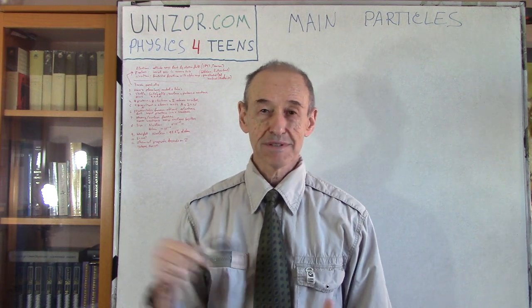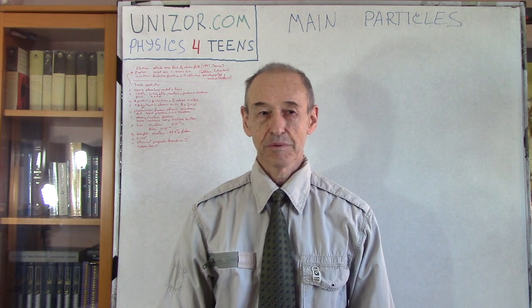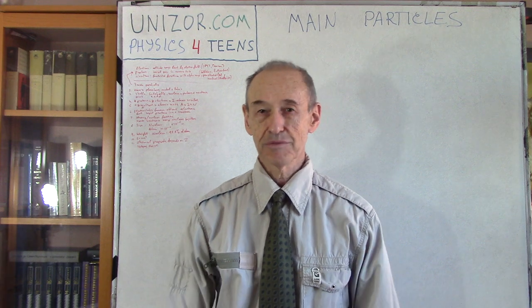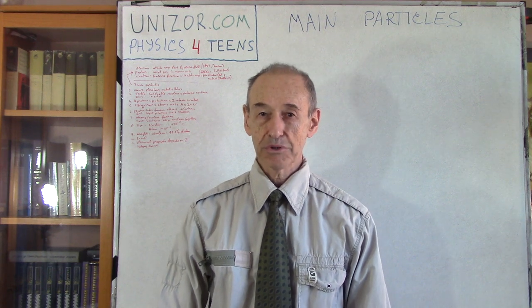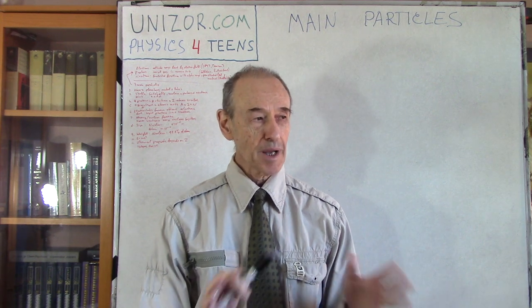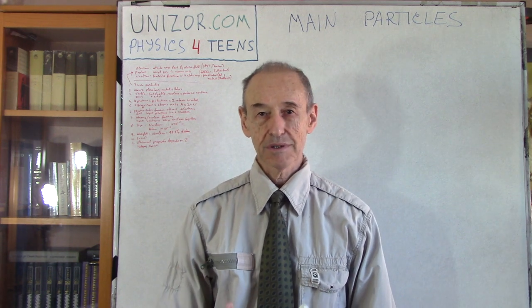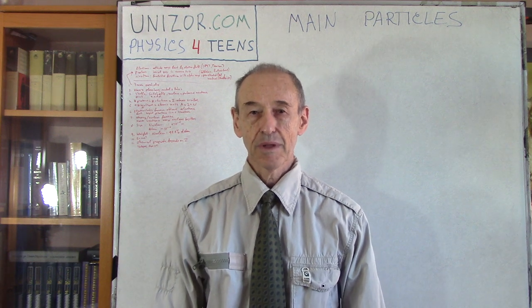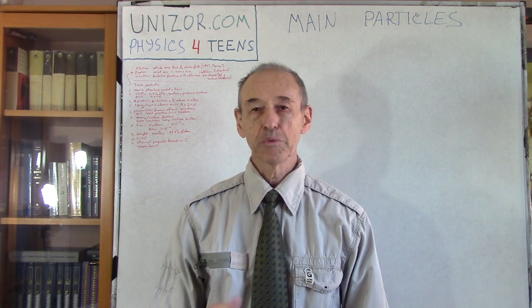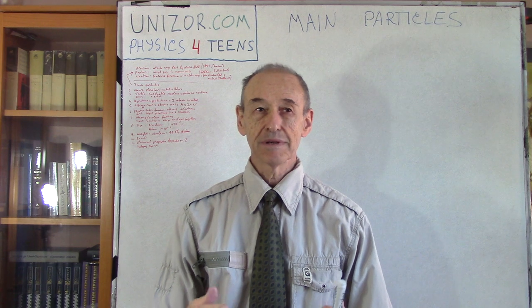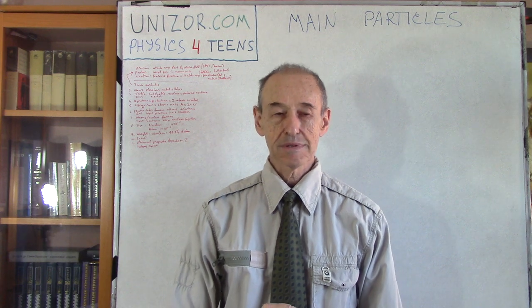Then they started digging into the atoms and three main particles were discovered. What is an atom? It's electrons, protons, and neutrons. A couple of words about these particles. They are main particles because they are main building blocks of matter. There are many other particles and there is a whole story about how we can put them into some kind of theory or structure.